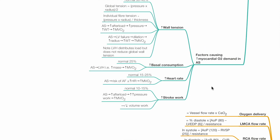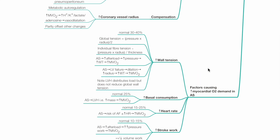Factors causing increased myocardial oxygen demand in aortic stenosis. First: increased wall tension. Global tension equals pressure times radius divided by 2. Individual fiber tension is proportional to pressure times radius divided by thickness. In aortic stenosis, increased afterload leads to increased left ventricular pressure, increased wall tension, and increased myocardial oxygen consumption. In LV failure due to aortic stenosis, left ventricular dilation increases the radius, further increasing wall tension and myocardial oxygen consumption.